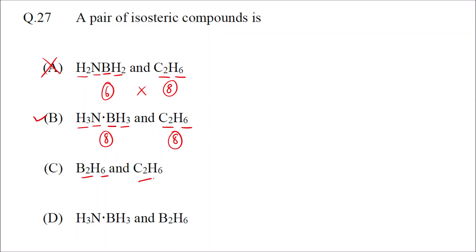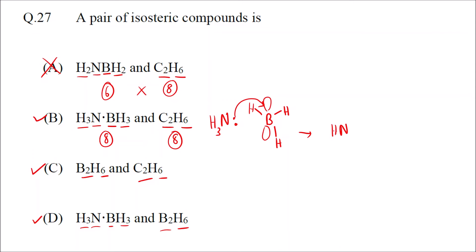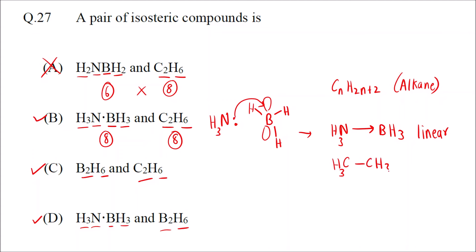Option C: 2 plus 6 equals 8, and 2 plus 6 equals 8 — so that can also be the answer. Now what we have to check is the shape. NH₃·BH₃ — this is an adduct formed by a coordinate bond. NH₃ is electron rich and donates its lone pair to the vacant p orbital of boron. So we get the adduct NH₃·BH₃, which is linear. C₂H₆ follows CₙH₂ₙ₊₂, the formula for an alkane — CH₃CH₃ — also linear. So the shape is same.